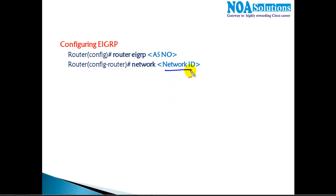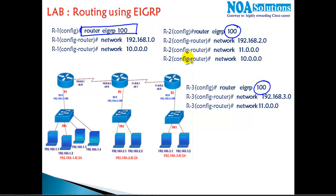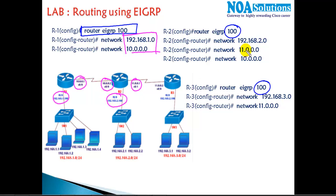After that we need to advertise networks. I'm going to use EIGRP 100 as my AS number everywhere to ensure they form the neighborship. On Router 1 I'm advertising the 10-dot and 1-dot networks. On Router 2 I'm advertising the 10, 11, and 2-dot networks. On Router 3 I'm advertising the WAN interface and LAN interface networks.